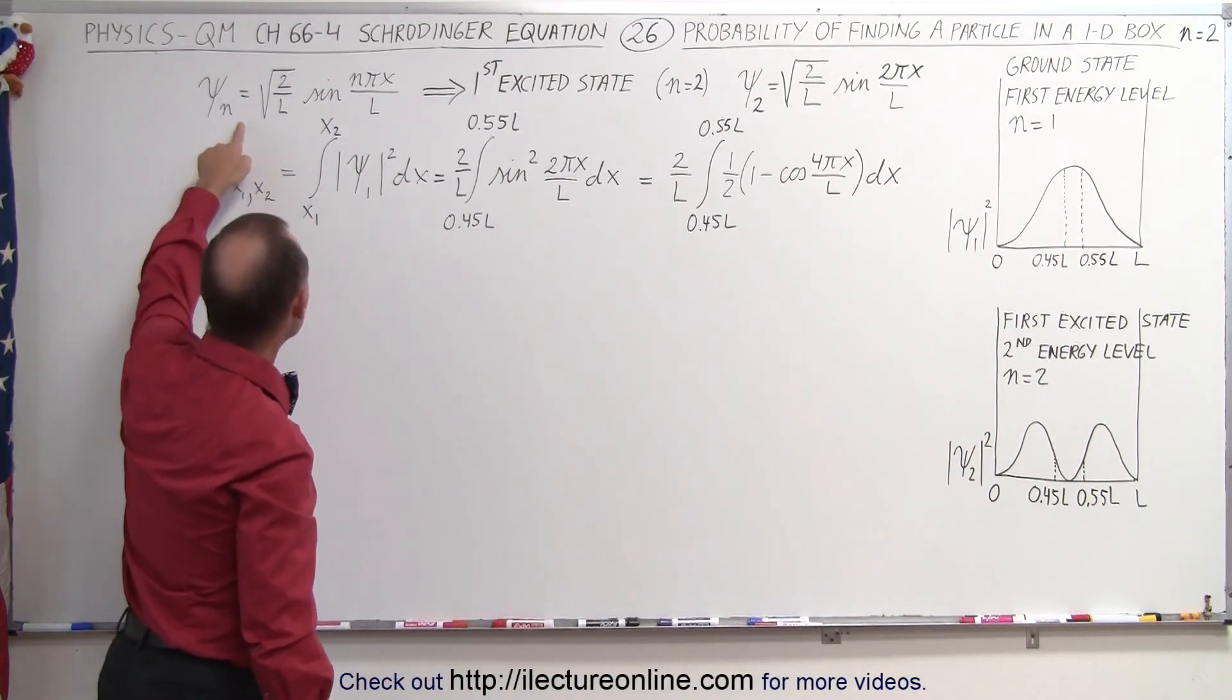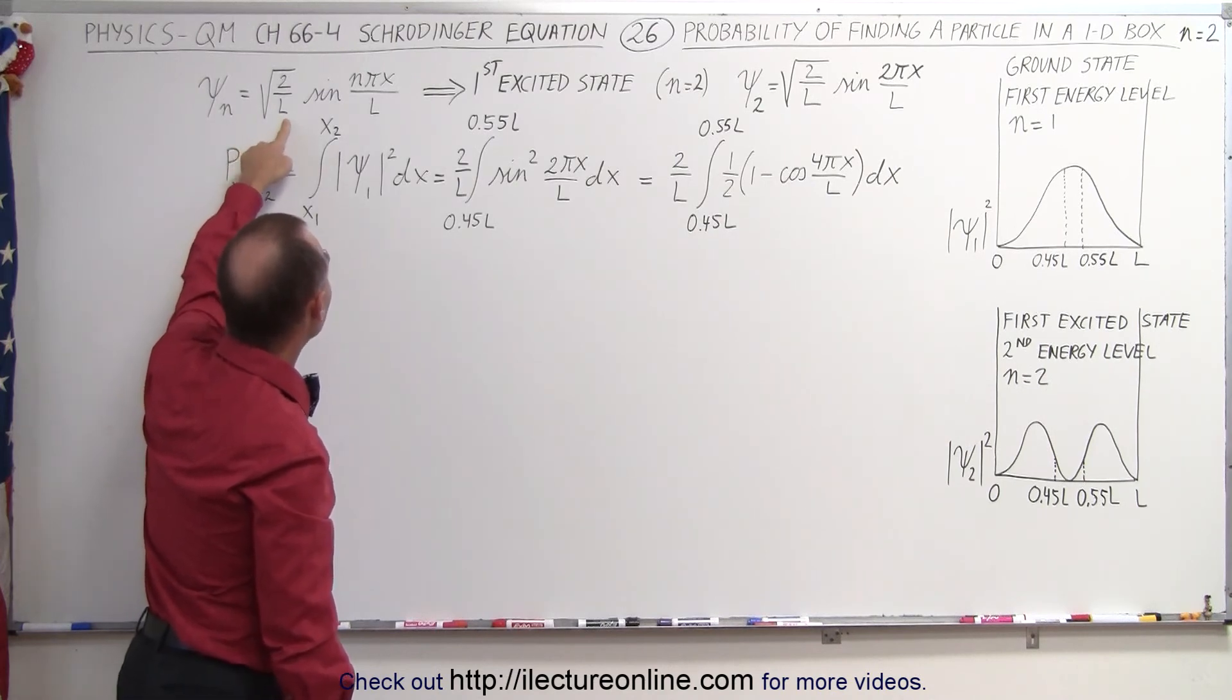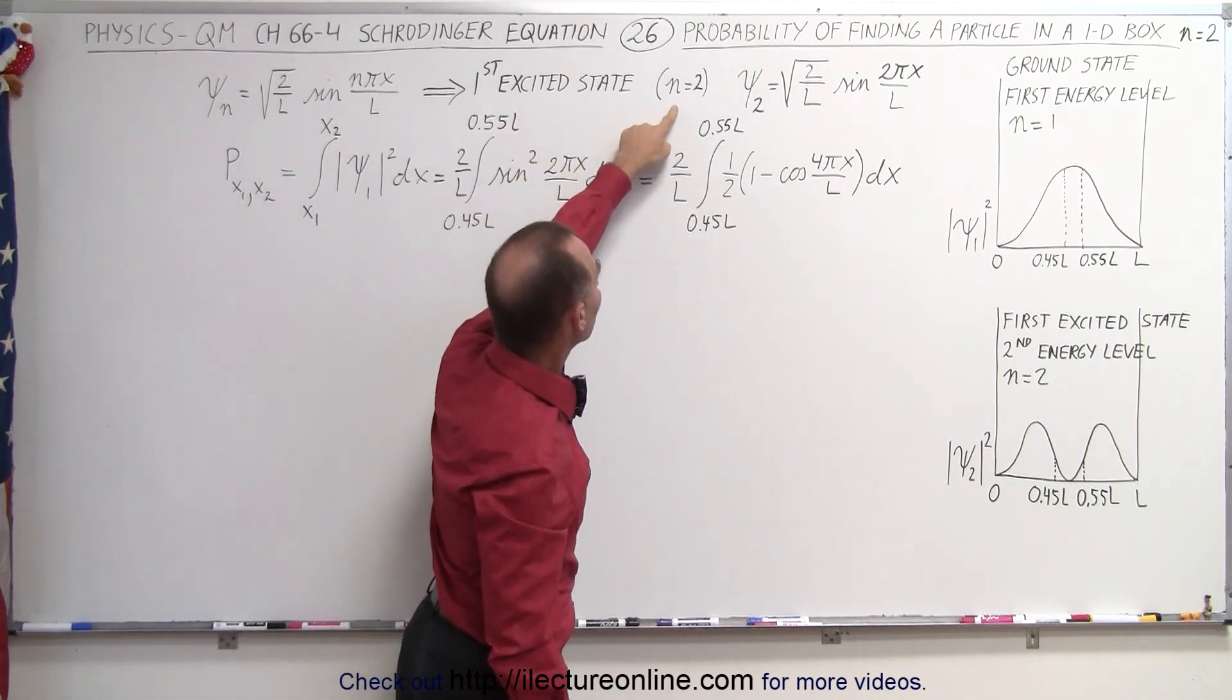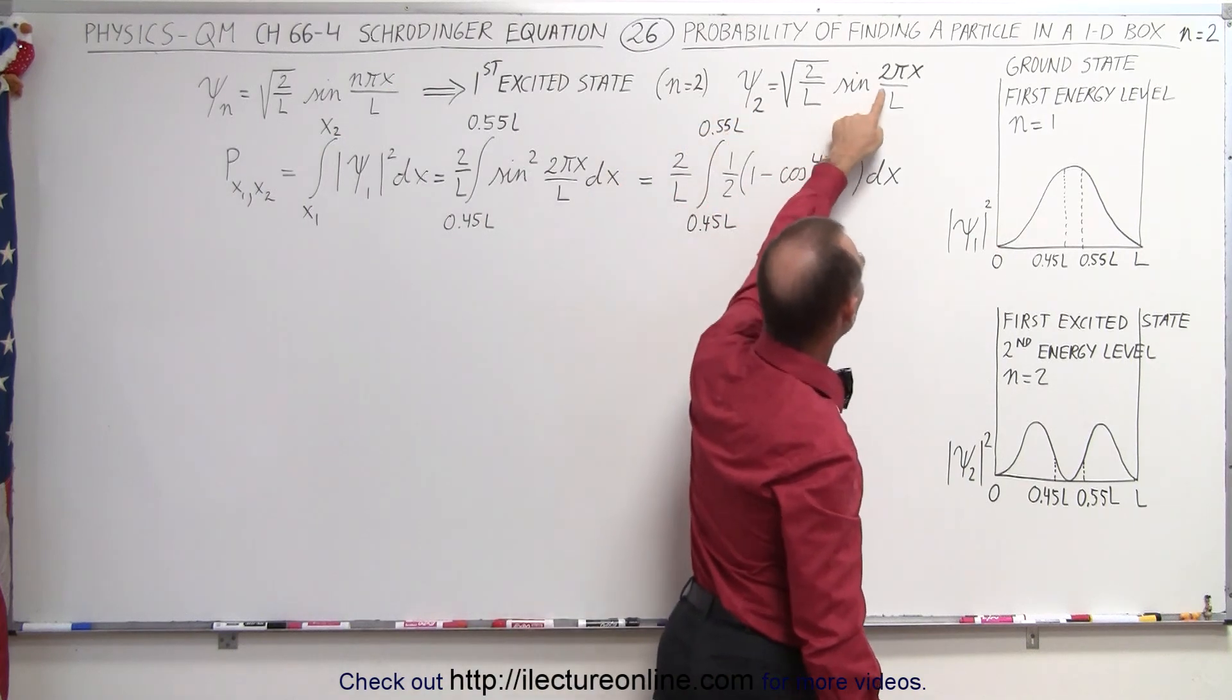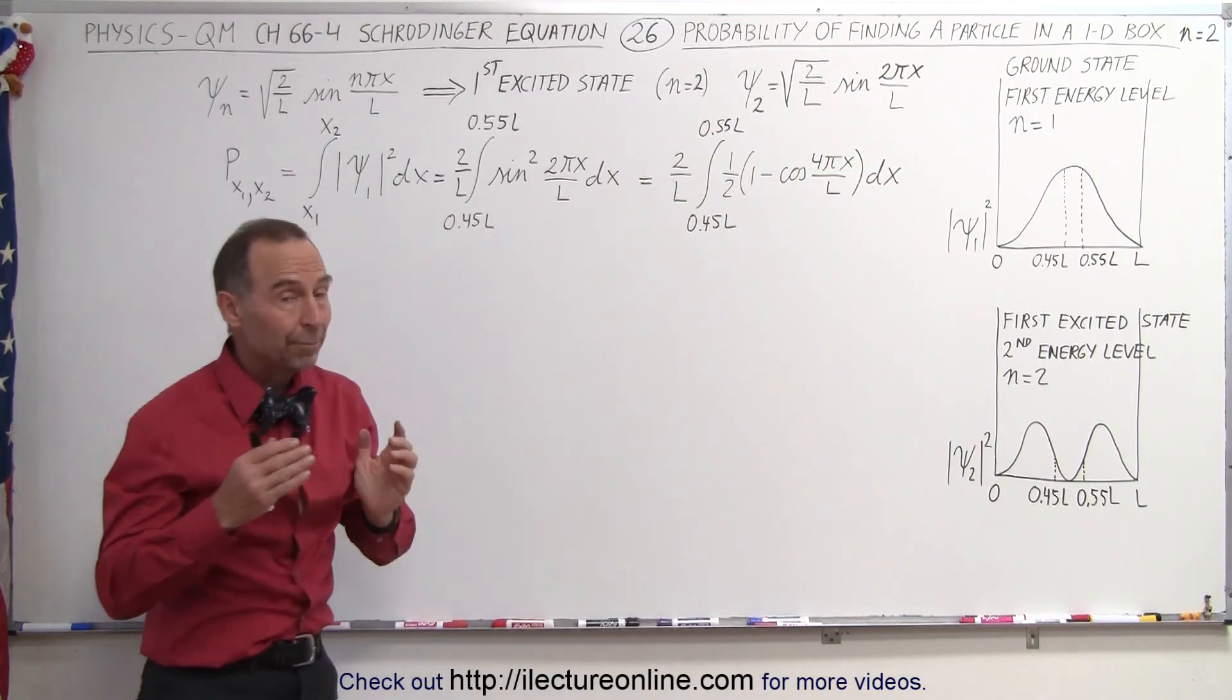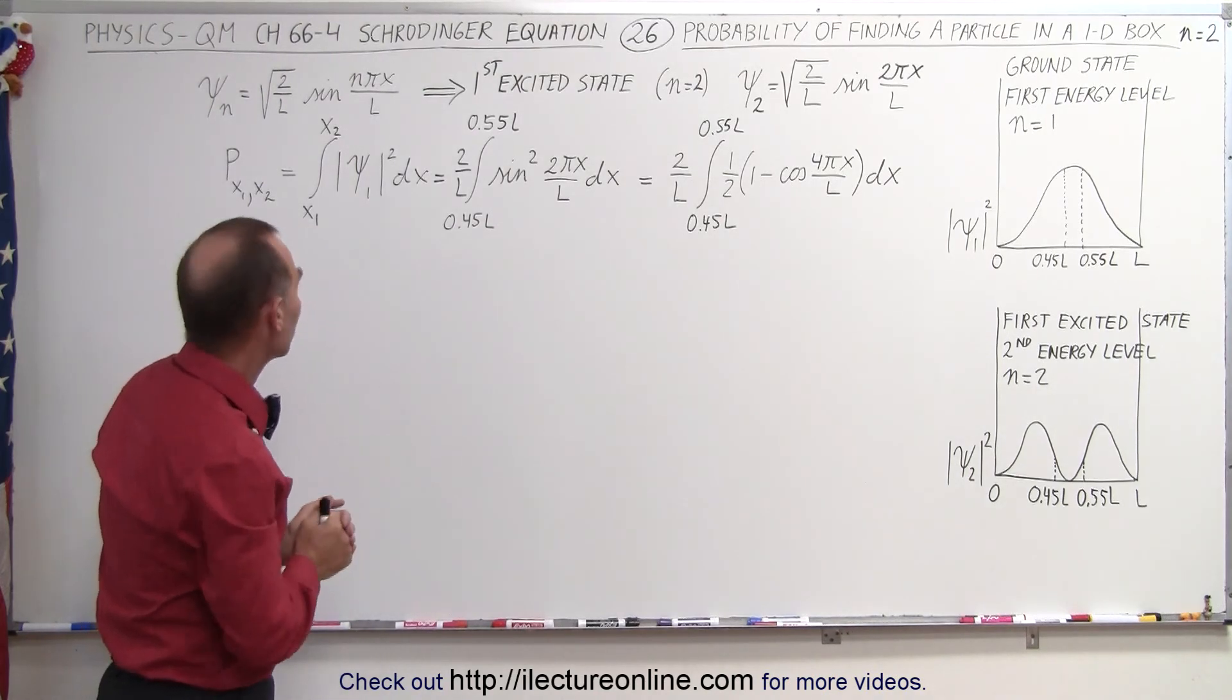The difference now is that we take the Schrödinger equation for particle in a one-dimensional box and apply the value for n which is the energy level. Instead of n equals one, now n equals two and that's the only thing that changes in our equation. But that will make a big difference in calculating the probability of finding it in that same range.